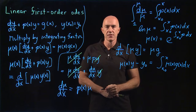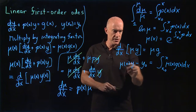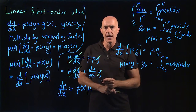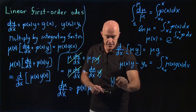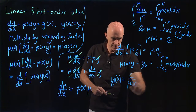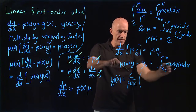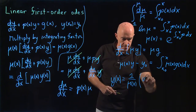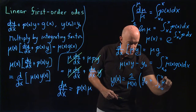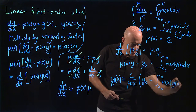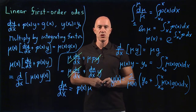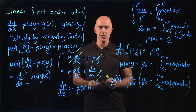Finally, we just need to solve for y. We add y0 to both sides and divide through by mu(x). We get y(x) equals 1 over mu(x) times the quantity y0 plus the integral from x0 to x of mu(x)·g(x) dx. That's the analytical solution to the linear first order equation.